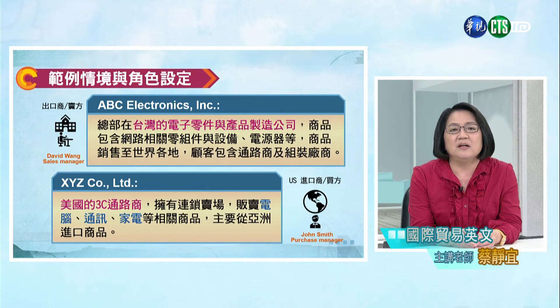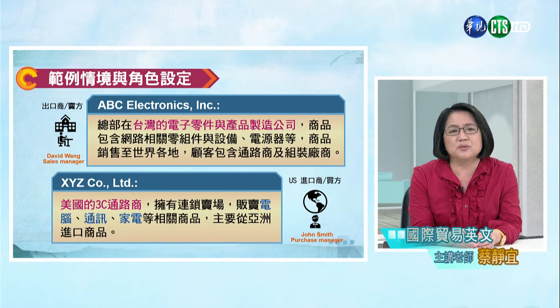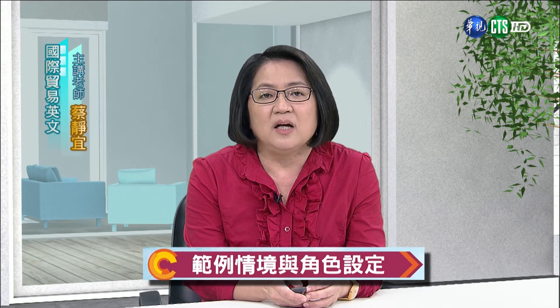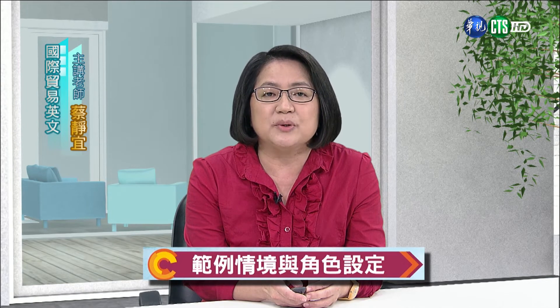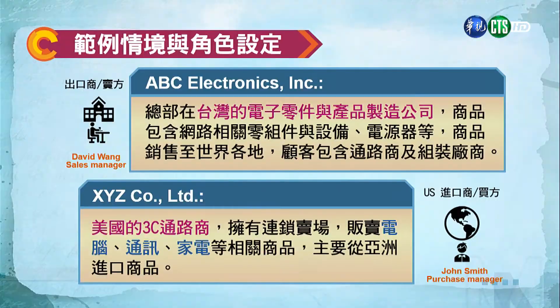在情境與角色的設定上，交易至少會有買賣雙方，所以我們設定了一個出口商以及一個進口商。臺灣基本上是一個製造商導向的國家，內需市場只有兩千三百萬人口，所以是一個出口導向的國家。我們選定的企業叫做ABC Electronics Inc。